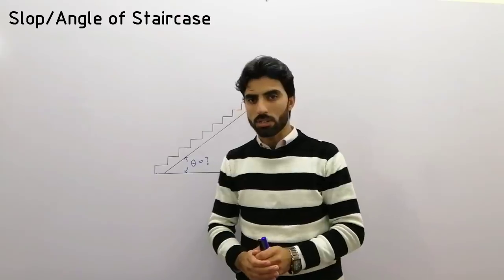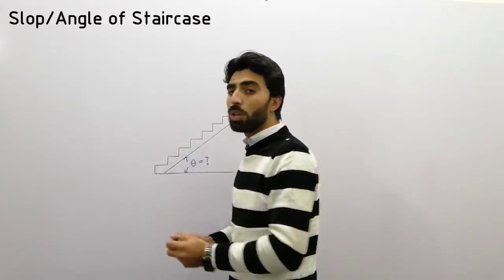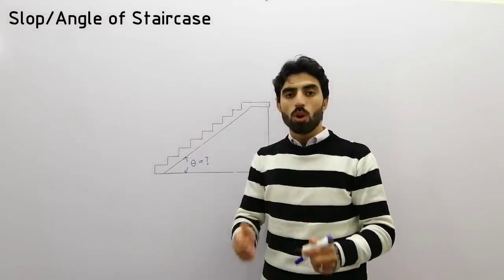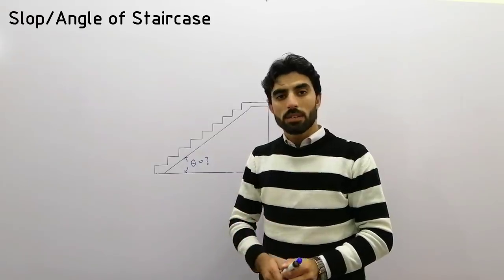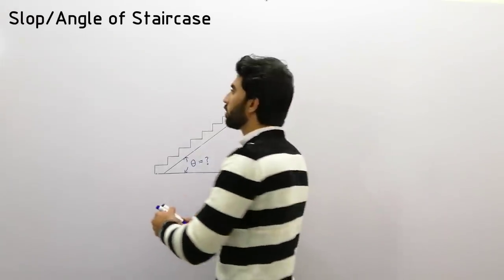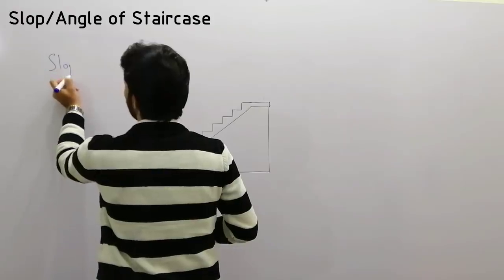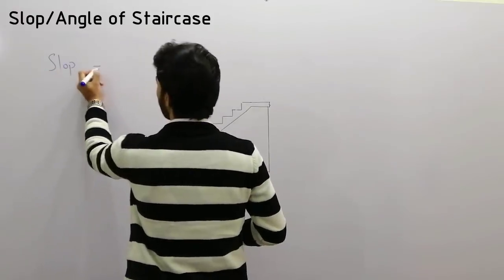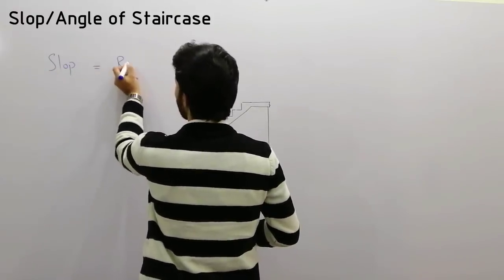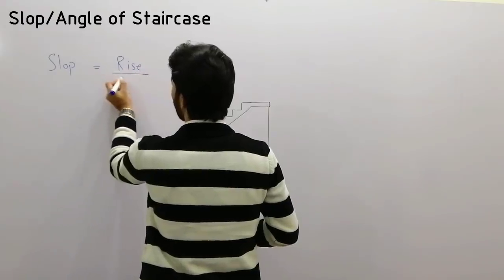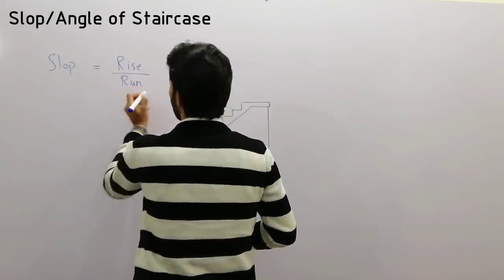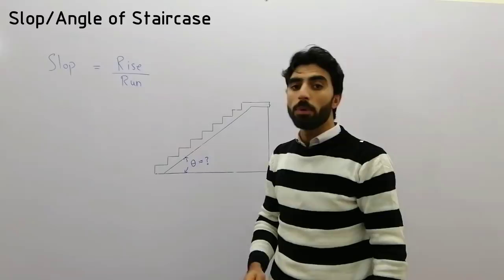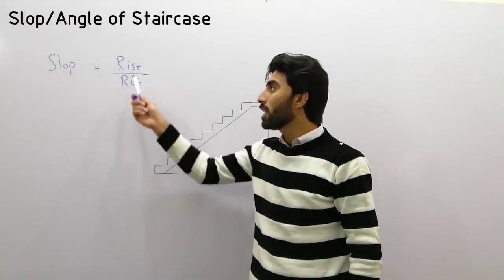So we know that slope equals rise divided by run. Slope can be defined as rise divided by run. If you want to find the slope or angle of a staircase, we require the rise and run measurements.